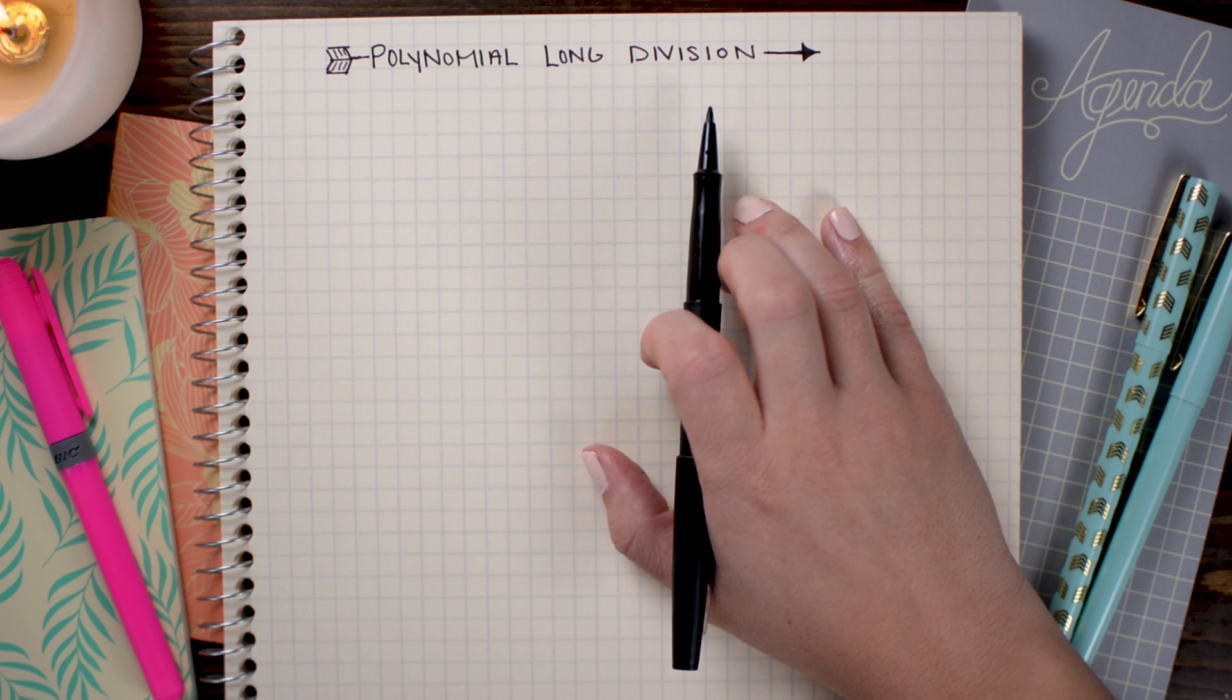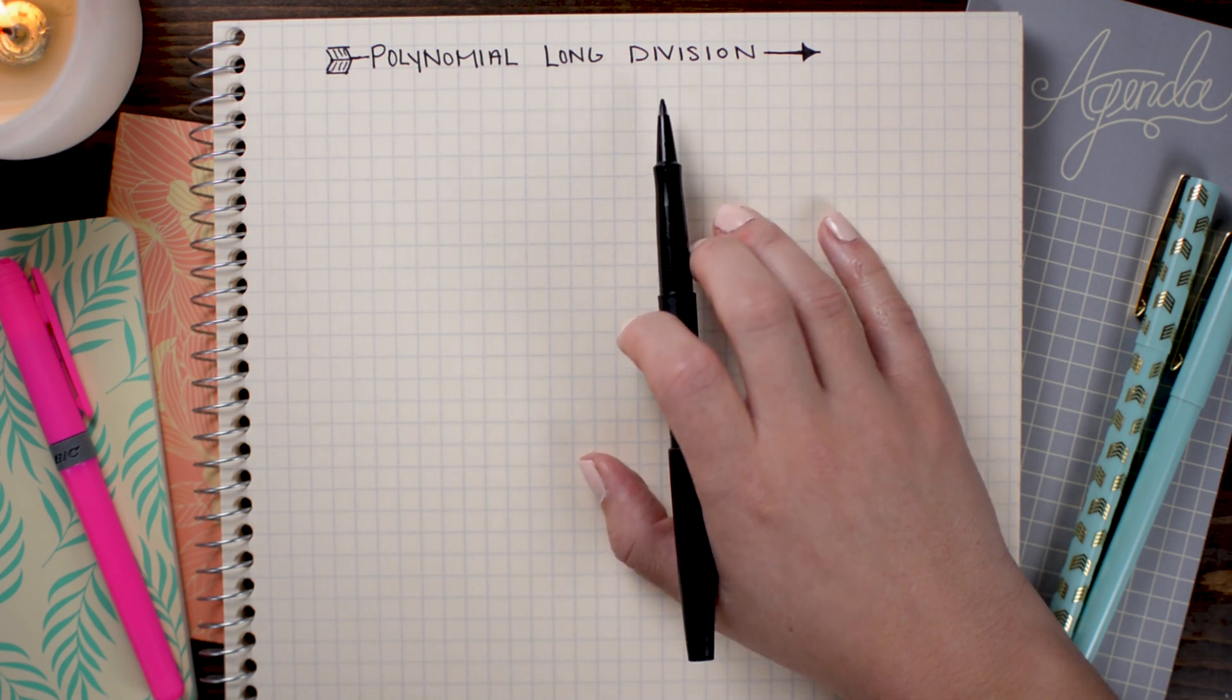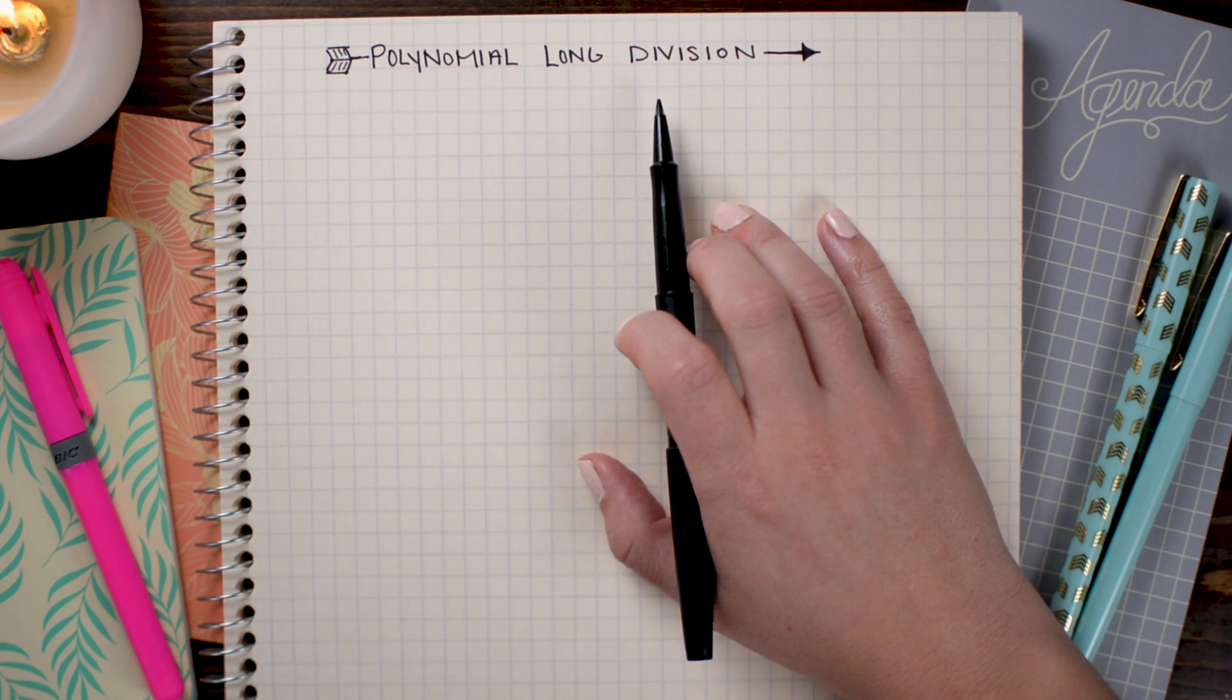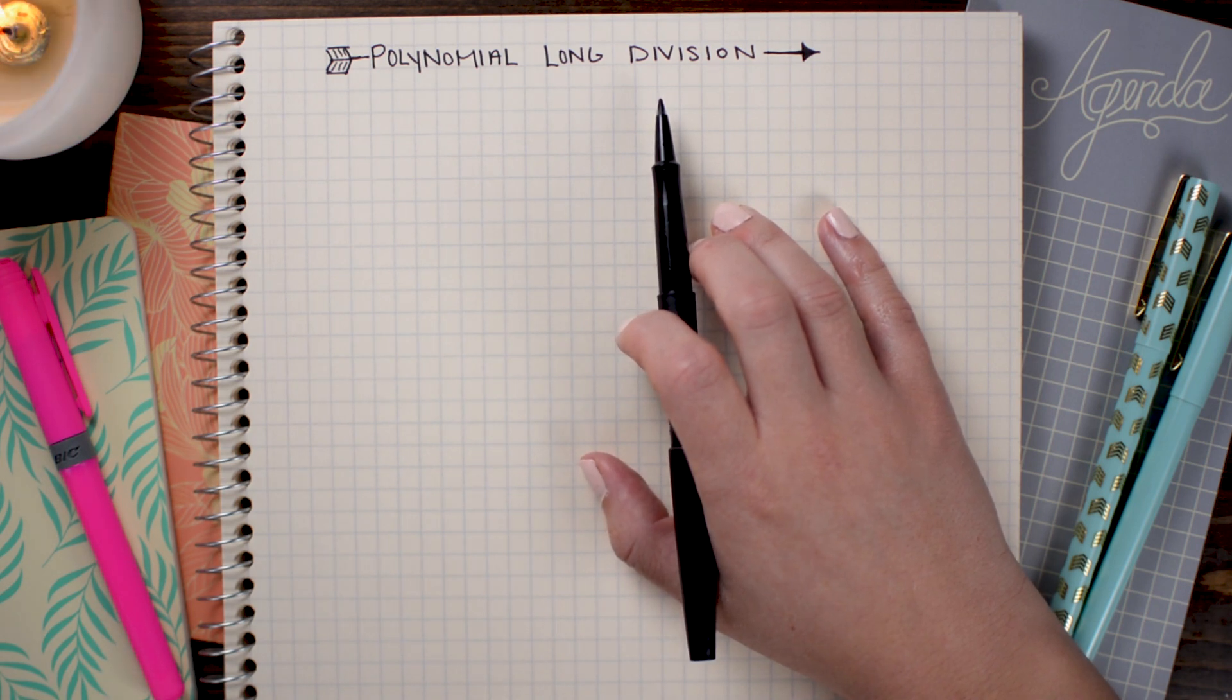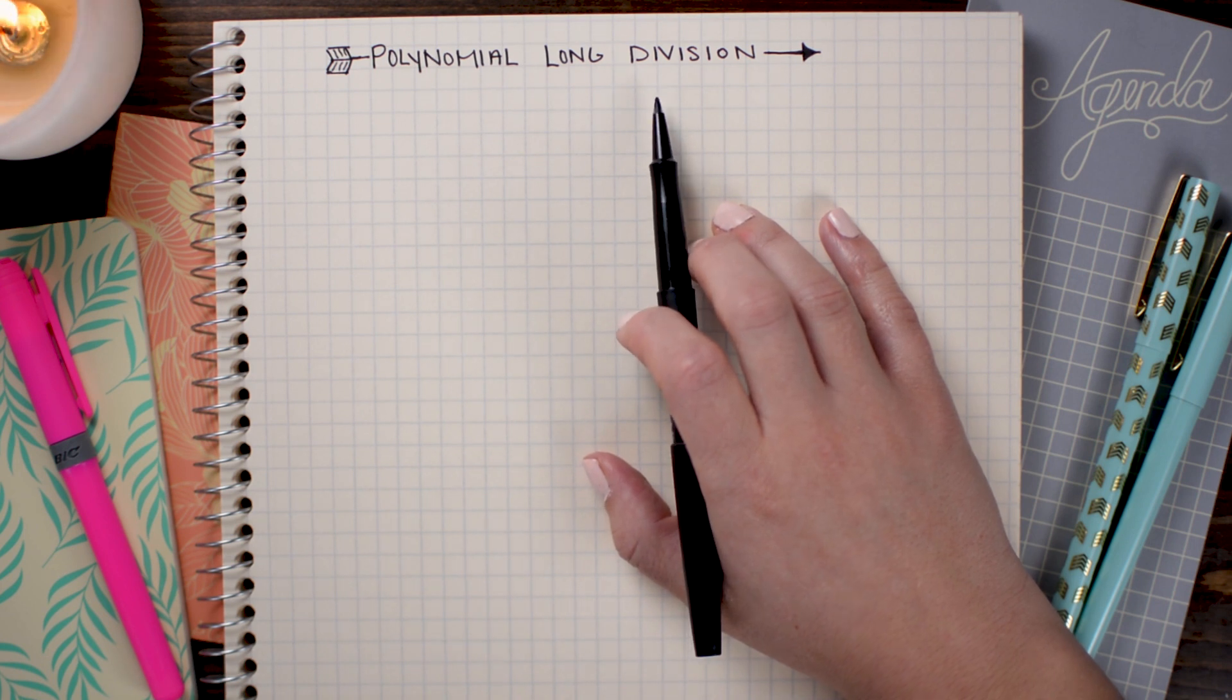But I think that if you're a little rusty on the steps, it can be really useful to see it with numbers before we move into doing it with variables as well. So let's start with a regular old-school long division problem.